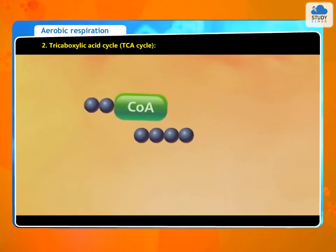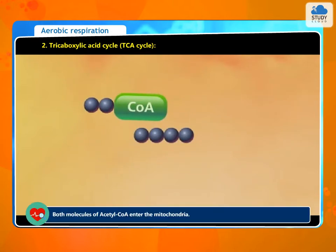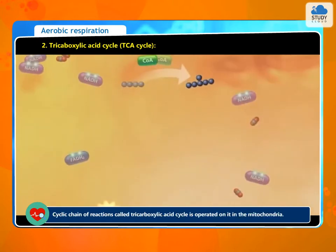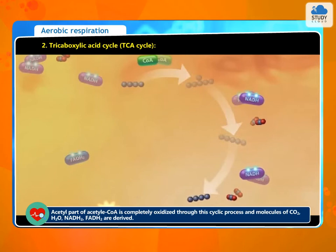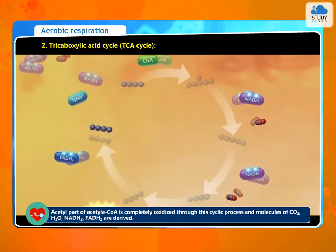Step 2: Tricarboxylic acid cycle, or TCA cycle. Both molecules of acetyl CoA enter the mitochondria. A cyclic chain of reactions called the tricarboxylic acid cycle operates on it in the mitochondria. The acetyl part of acetyl CoA is completely oxidized through this cyclic process, and molecules of CO2, H2O, NADH2, and FADH2 are derived.